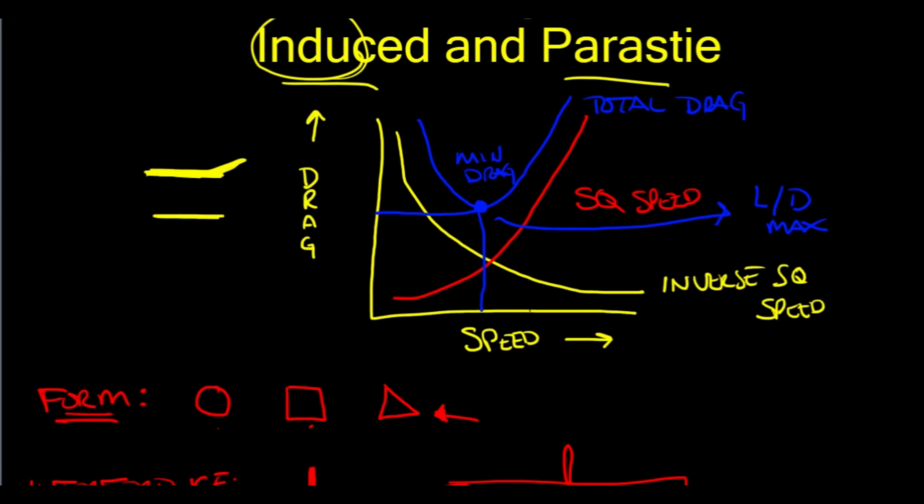Any faster, and our drag is going to increase. Any slower, and our drag increases. So, we want to know this speed, and this speed alone, in the event of an engine failure.